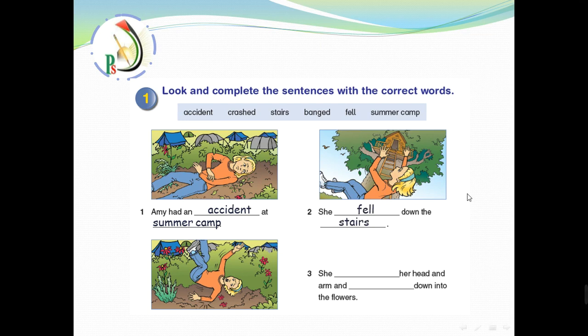The third sentence, she banged her head and arm. What did we say about the verb which comes with the head and the arm or the part of the body? It's banged. She banged her head and arm and crashed down into the flowers. So when you see head and arm, try to use the verb bang and crashed down into the flowers. Very good.